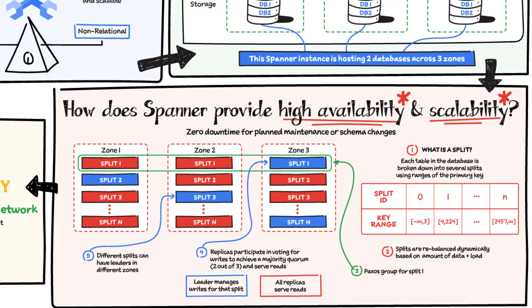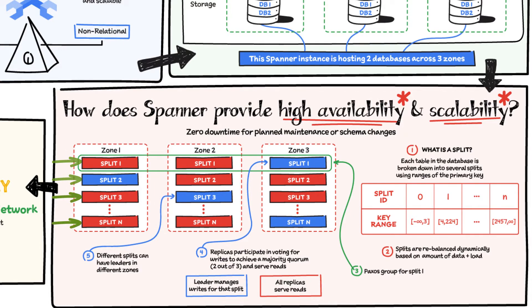How does Spanner provide high availability and scalability? Each table in the database is stored sorted by primary keys. Tables are divided by ranges of those primary keys, and these divisions are known as splits. Each split is managed completely independently by different Spanner nodes. The number of splits for a table varies according to the amount of data — empty tables have only a single split. The splits are rebalanced dynamically depending on the amount of data and the load, which is called dynamic resharding.